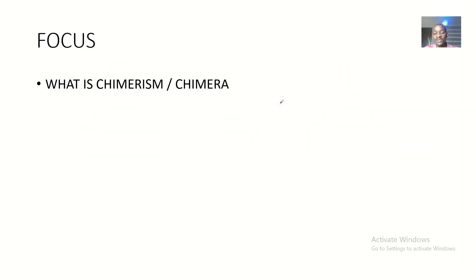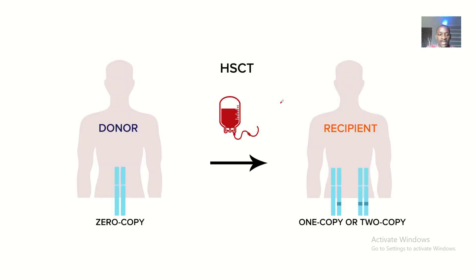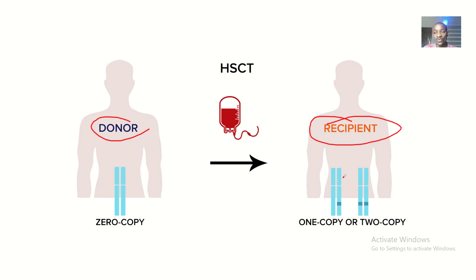So let's describe chimerism better. In chimerism, there is a donor and there is a recipient. The recipient will be having their own genetic material but will also be having a copy from the donor. So you'll be having parts of your body that are yours and parts of your body that are not yours.